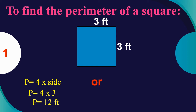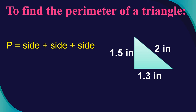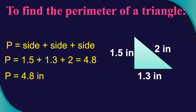We can also just add up all the sides: 3 + 3 + 3 + 3 = 12 feet — right back to 12 feet! Now let's find the perimeter of a triangle. To find the perimeter of a triangle, we add up all the sides: 1.5 + 1.3 + 2 = 4.8. Don't forget our units — the final answer is 4.8 inches.